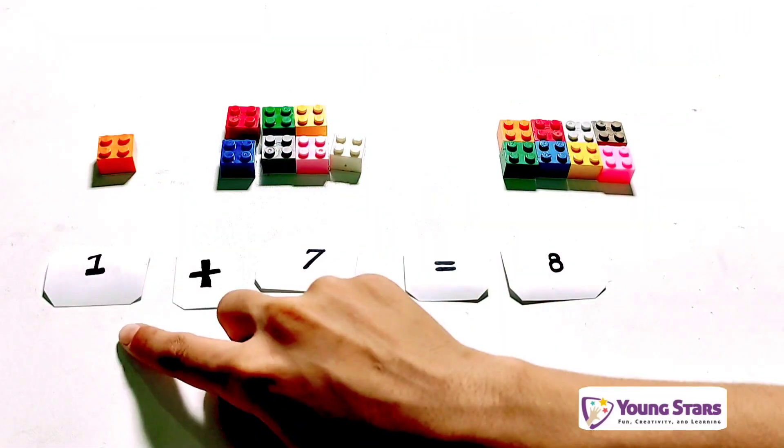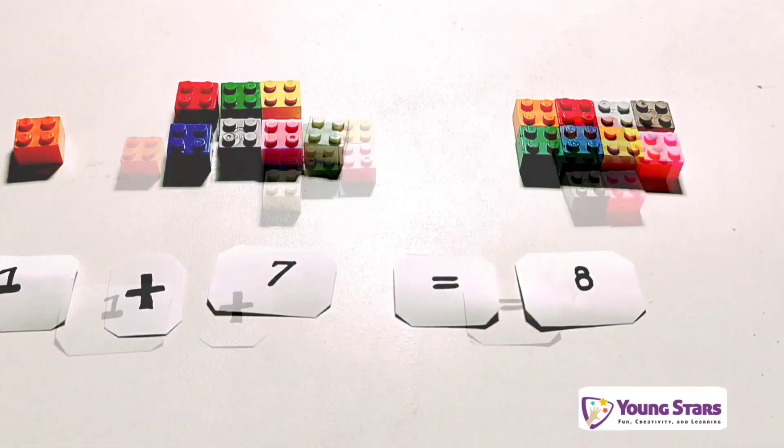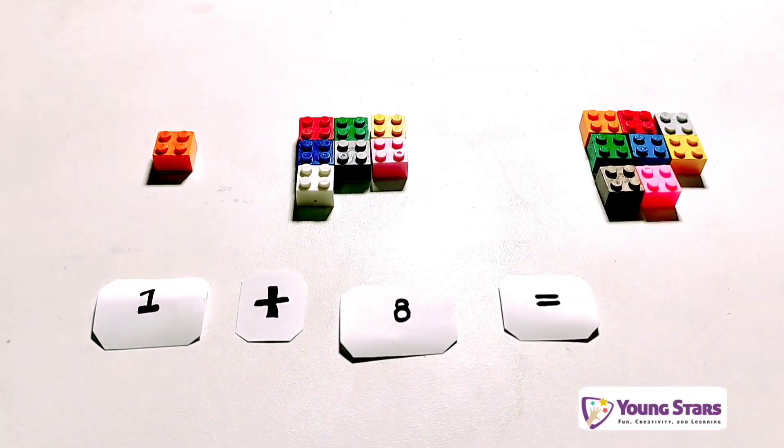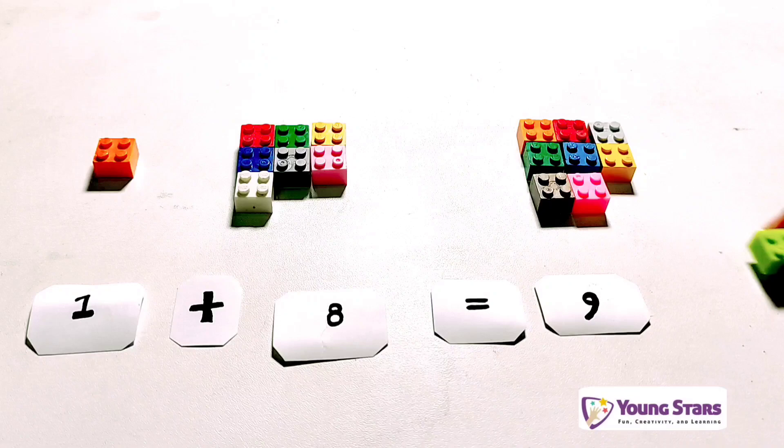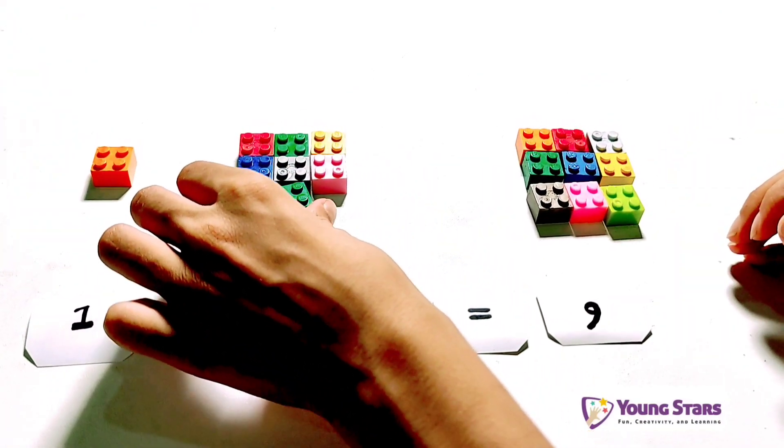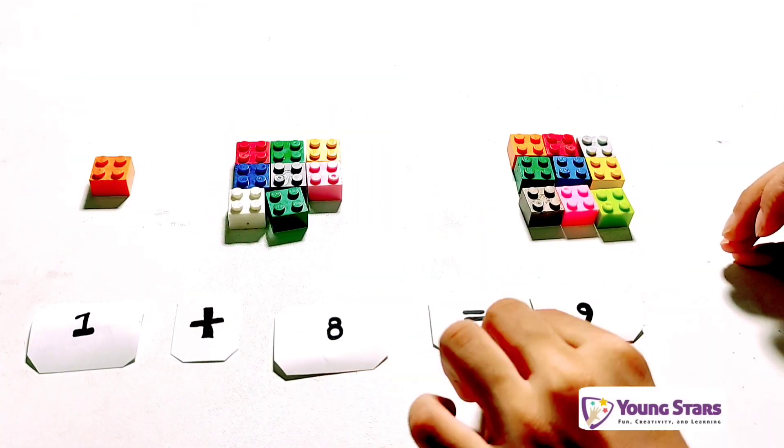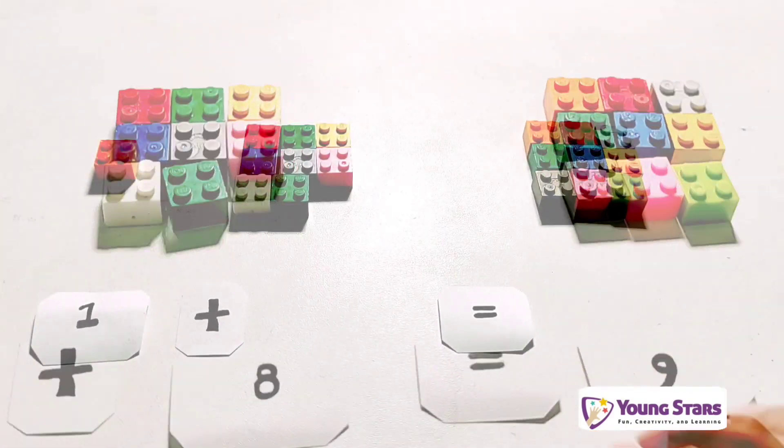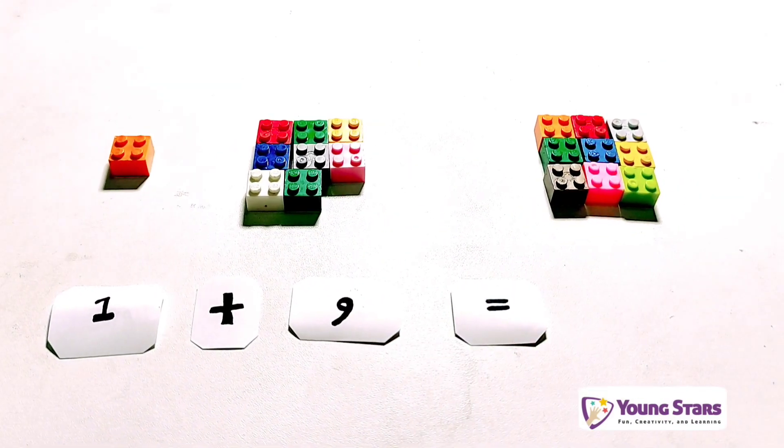One plus seven equals eight. One plus eight equals nine. One plus eight equals nine. One plus nine equals ten.